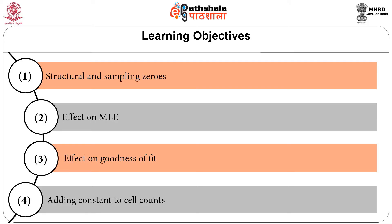Finally, we will look at the consequences of a very popular technique involving an ad hoc addition of a constant to the cell frequencies. The learning objectives include: first, the two different types of zeros in cell counts — structural zeros and sampling zeros — and for the remainder of the discussion we shall confine ourselves to sampling zeros and their consequences.